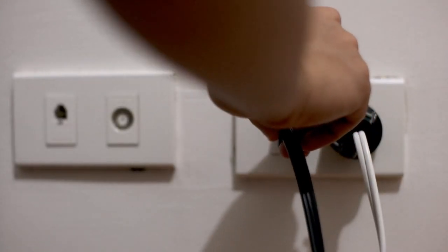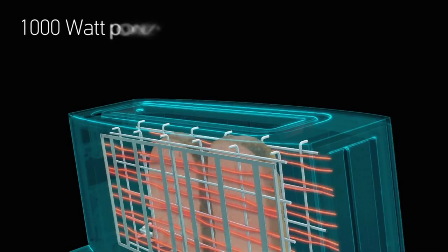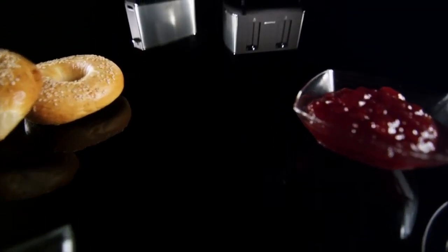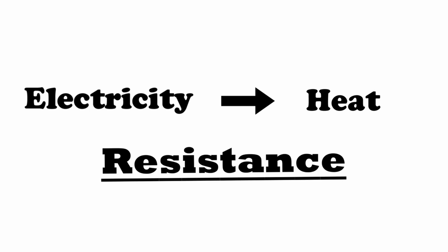Toasters are devices that convert electric energy from your electric supply into heat, which is then transferred into the bread, crumpet or whatever else you're brave enough to put in. The transfer of electricity to heat is what we will look at first, and resistance is the key to this transfer.